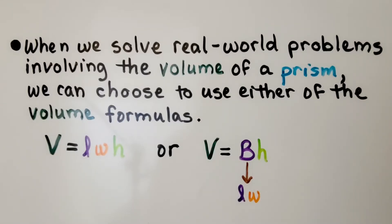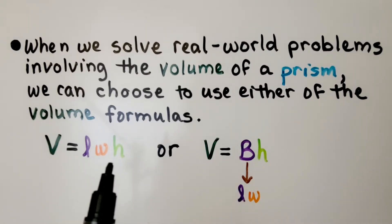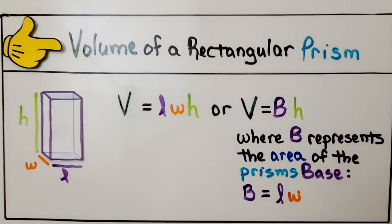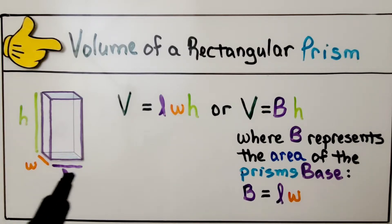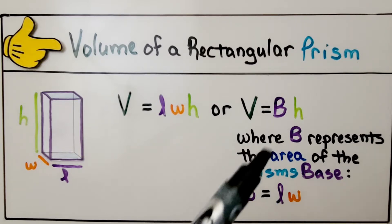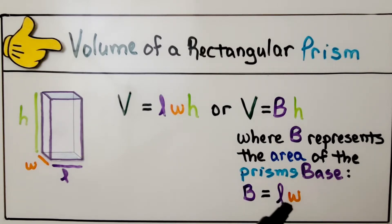When we solve real-world problems involving the volume of a prism, we can choose to use either of the volume formulas. We can do length times width times height, or if we know the length and width and a base is given, we can do base times height. We can multiply each of the three dimensions separately, or we can look at the length and width just as the base layer and multiply that by the height. This capital B represents the length times the width — that's why it's a capital.